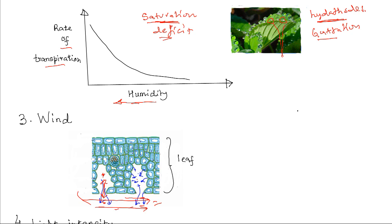On a windy day the rate of transpiration is high, but on a day when there is very little movement of air the rate of transpiration would be relatively lower. This is because when air is not moving fast, water vapor tends to accumulate around the stomata, thereby reducing the saturation deficit and greatly reducing the rate of transpiration. Wind affects the saturation deficit by blowing away water vapor, but if there is no wind, water vapor accumulates around the stomata and reduces the saturation deficit, thereby reducing the rate of transpiration.